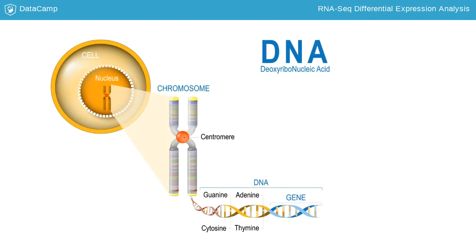All living organisms contain the instructions for life in their genome, which is present in the nuclei of their cells. The genome is comprised of double-stranded DNA divided into chromosomes. For humans there are 23, but different organisms will have different numbers of chromosomes.